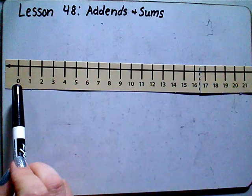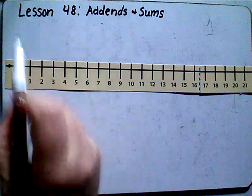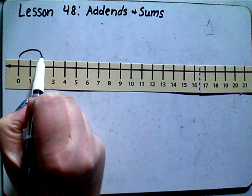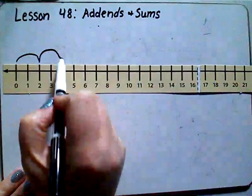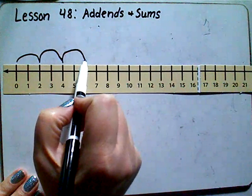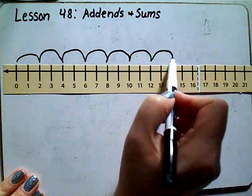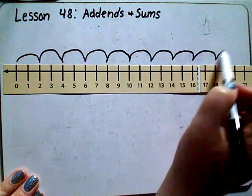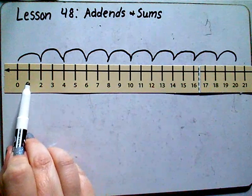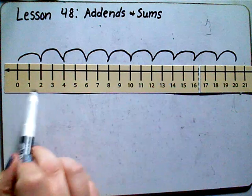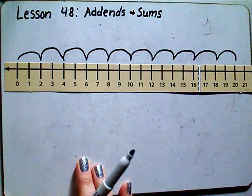When we count by twos, we start at zero. We don't count the one, but we skip to the next number, which would be two. So we go from zero to two, then four, six, eight, ten, twelve, fourteen, sixteen, eighteen, and twenty. Numbers like two, four, six, eight, ten, twelve, fourteen, sixteen, eighteen, and twenty — we say those are all even numbers.